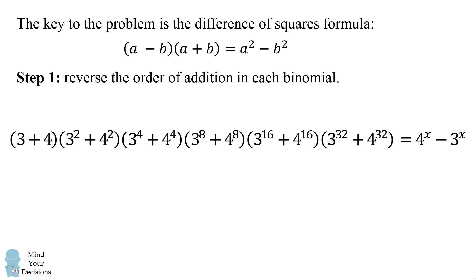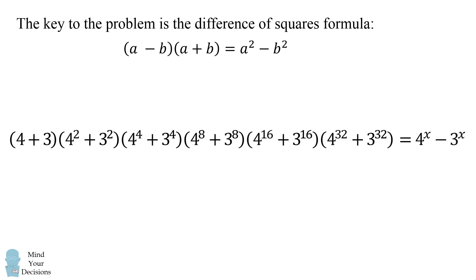So the first thing we'll do is reverse the order of addition in each binomial. Now we will multiply both sides by the quantity 4 minus 3 which is equal to 1.